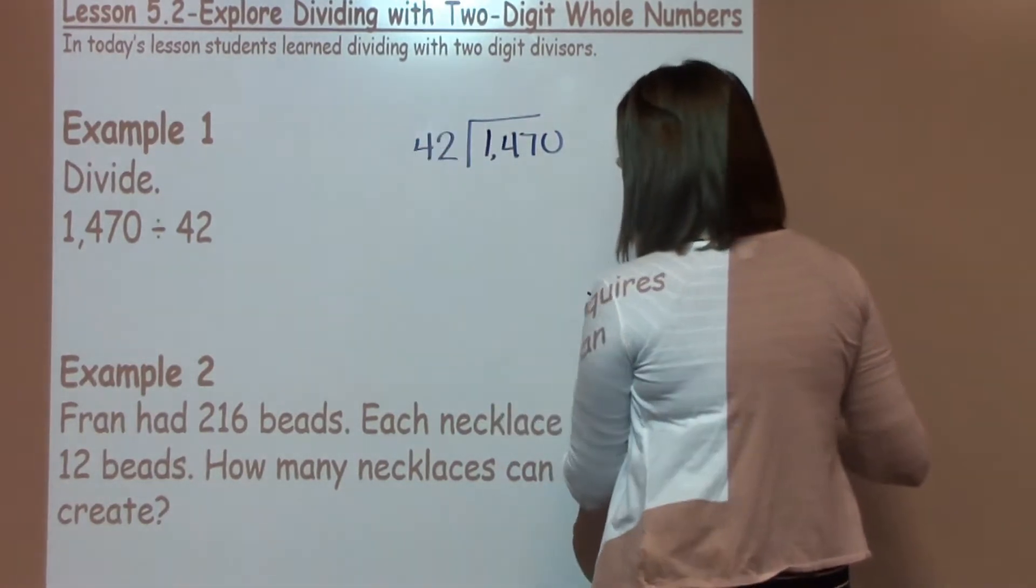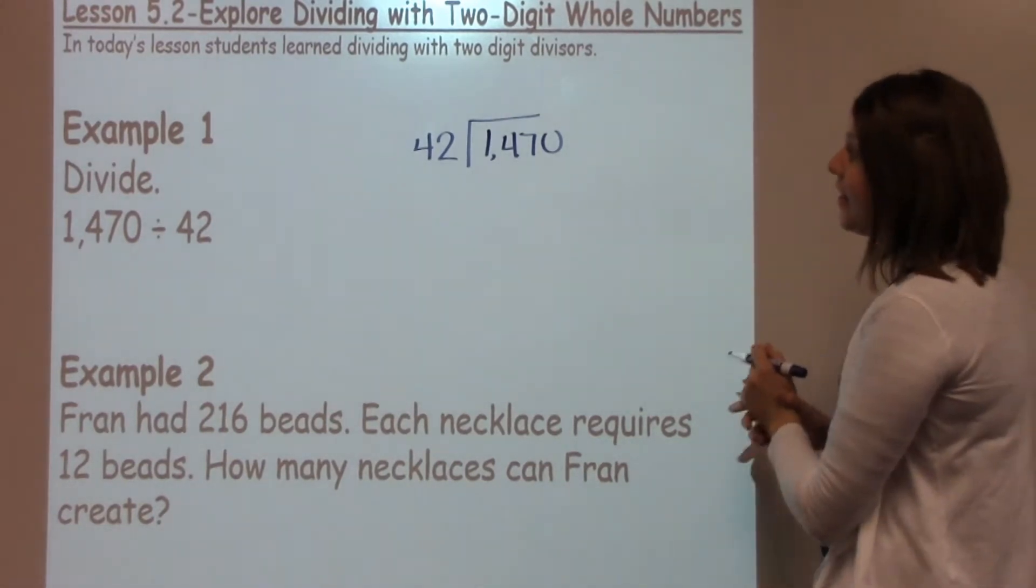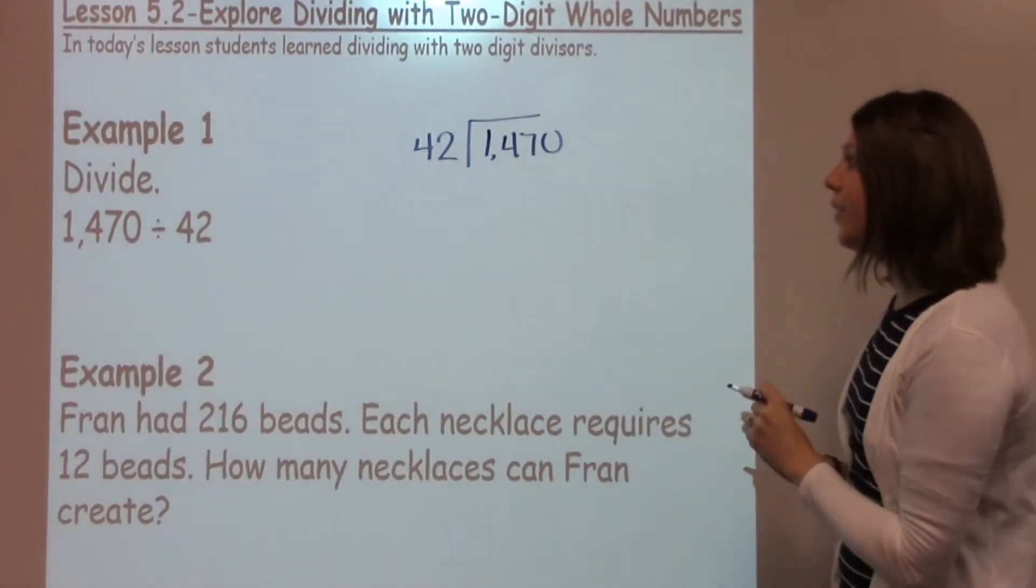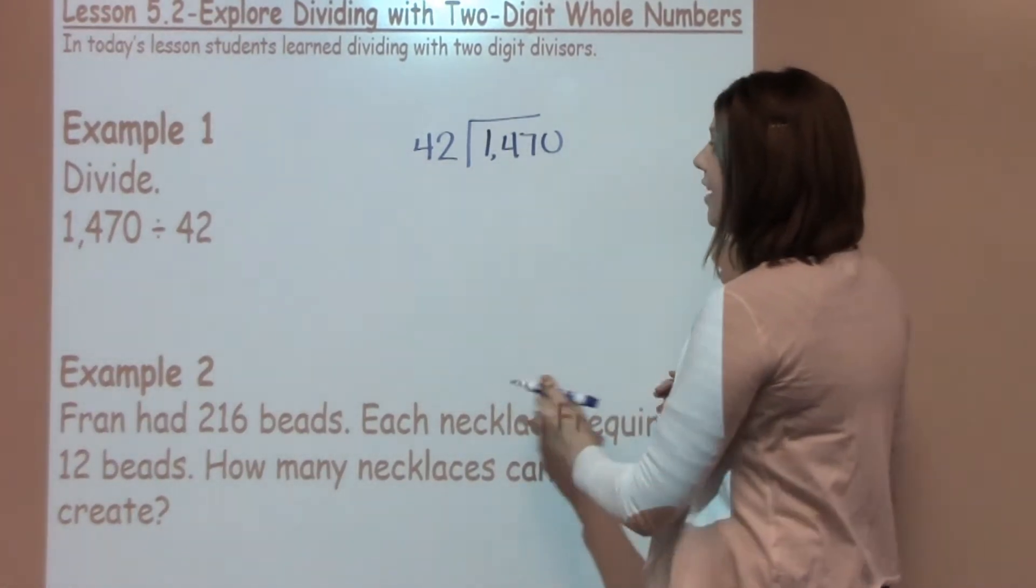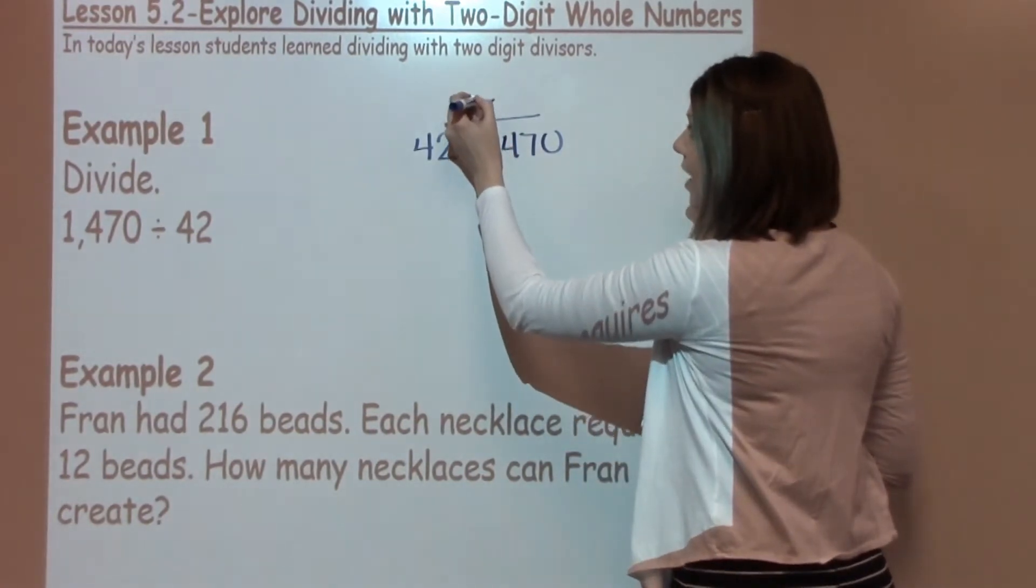A couple of key vocabulary words that you might want to talk over with your 5th grader: this is our divisor and this is our dividend and our answer is our quotient. The first thing I'm going to think about is, can 42 go into 1? I know it can't, so I'm going to put an X up there.